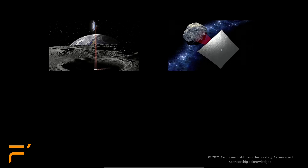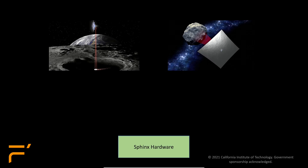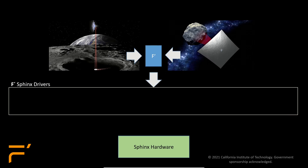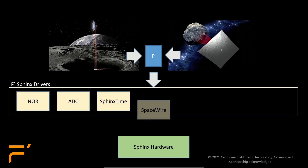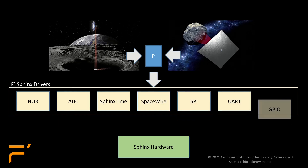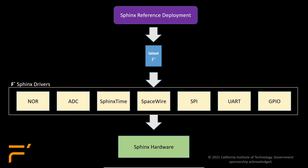Lunar Flashlight and NeoScout are two CubeSat missions that use the Sphinx platform and run the F' flight software framework. As part of these CubeSats' flight software development effort, we designed, implemented, and tested drivers for the Sphinx, including drivers for NOR, ADC, Sphinx Time, SpaceWire, and both on-chip and firmware SPI, GPIOs, and UART. For the open source F' Sphinx reference deployment, we are using the Sphinx platform, the Sphinx drivers, and the latest version of F', which at the time of this recording is version 1.5.3.